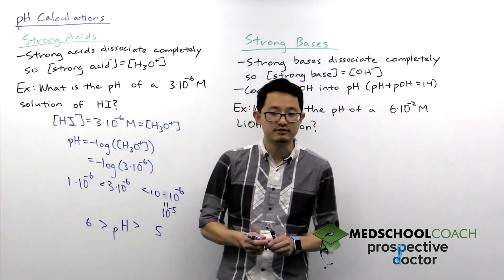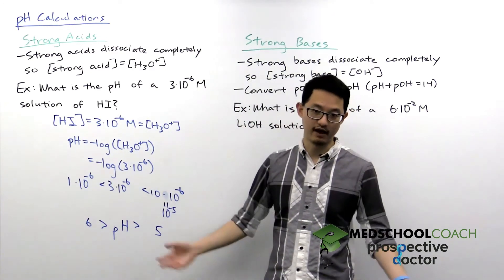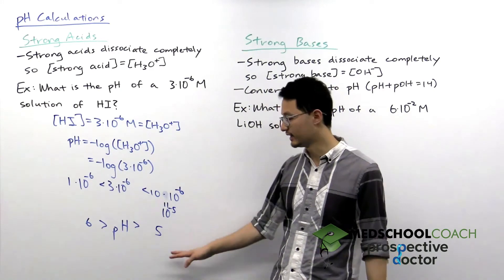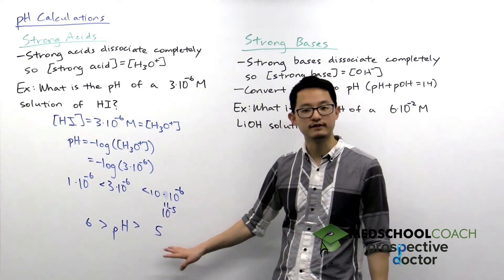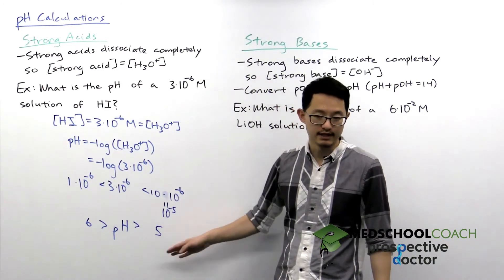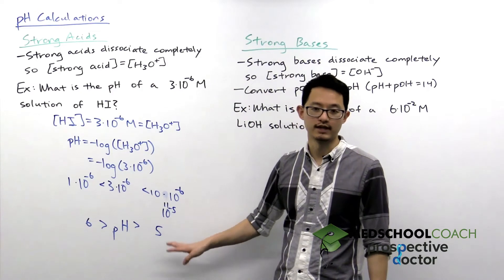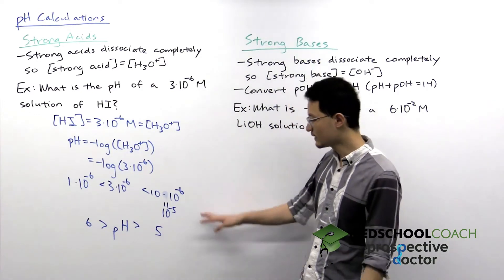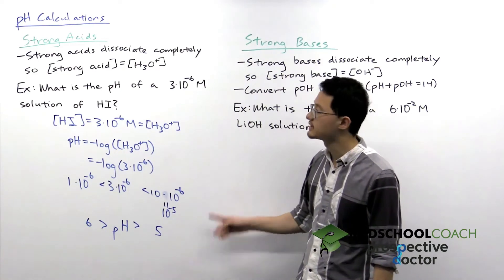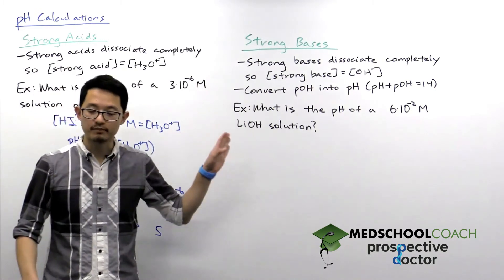This is all you need to be able to do for the MCAT, which means the MCAT is not going to give you answer choices of 5.1, 5.3, 5.4, 5.7. They're going to give you numbers that are different enough that this rounding approach will be sufficient to get the correct answer. Here's one example of how to do pH calculations — let's take a look at another example with strong bases.